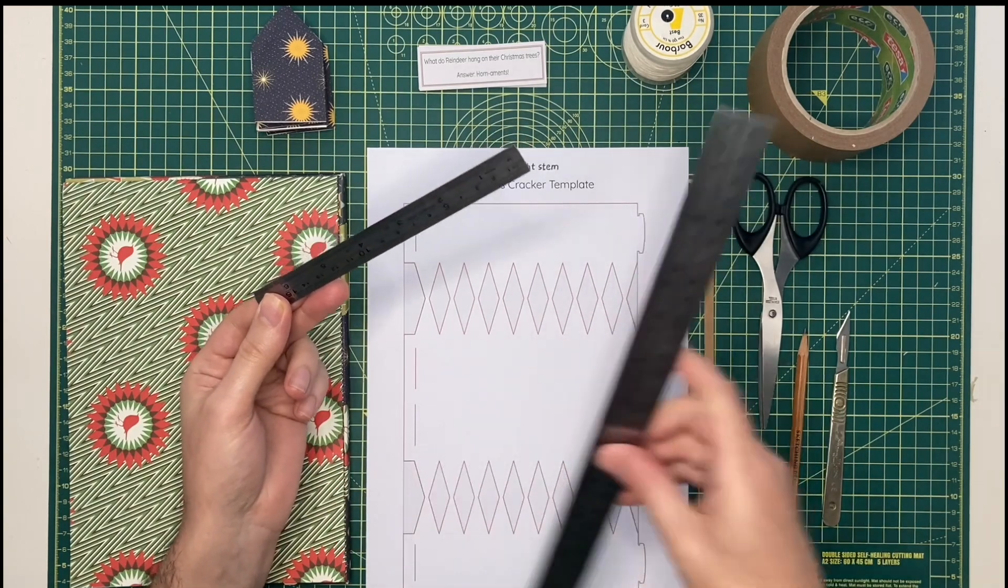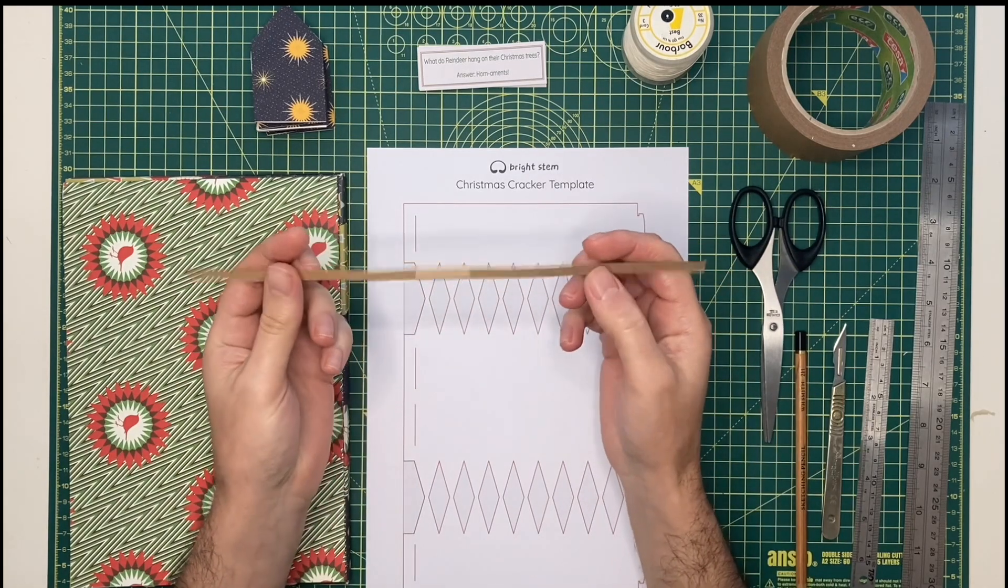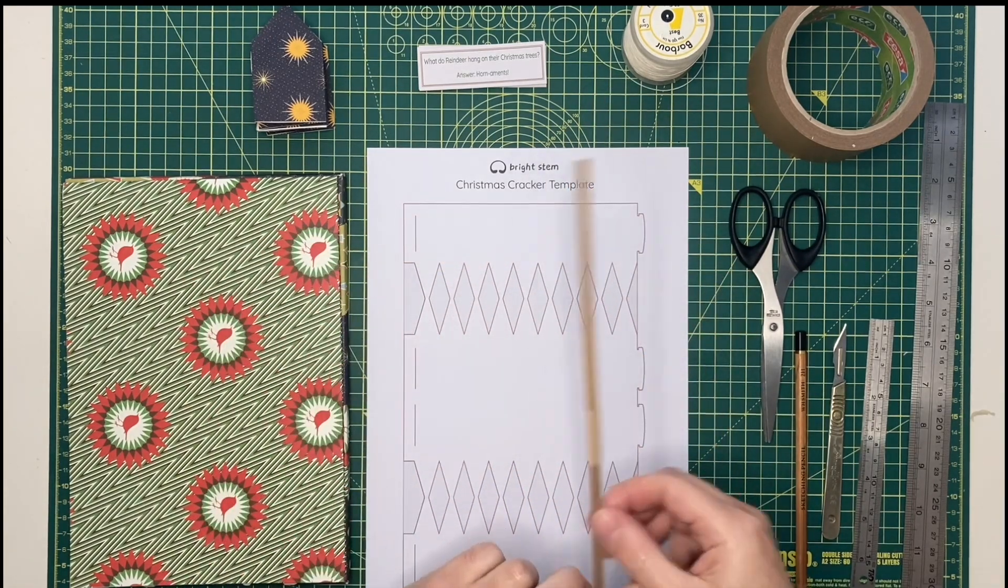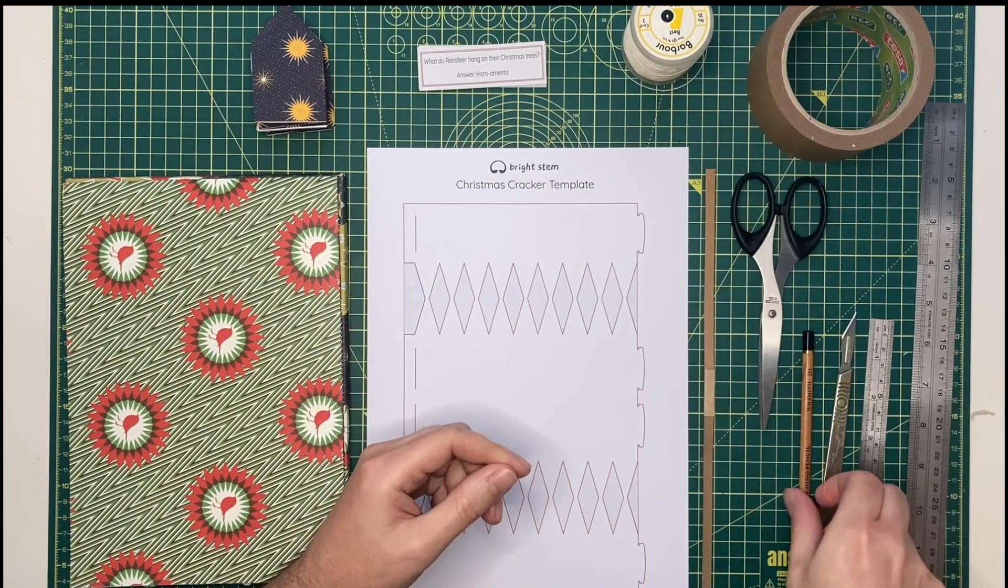Small and medium if you have the choice, but either will do. Some cracker snaps - that's the thing that goes bang in the middle. You can get them from craft shops or online. Some paper tape and a pencil.